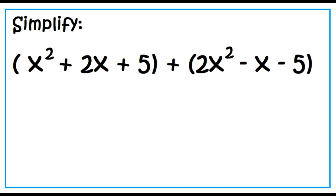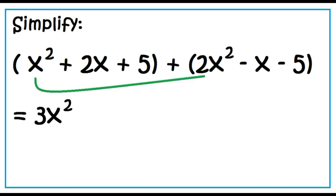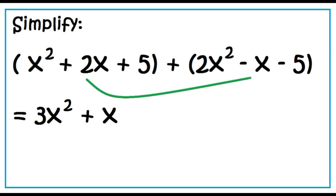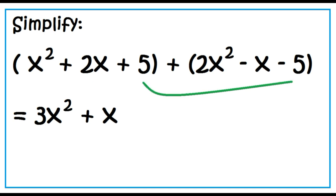Simplify: the quantity x squared plus 2x squared plus 2x plus 5, plus the quantity 2x squared minus x minus 5. Combining similar terms: x squared plus 2x squared is 3x squared; 2x plus negative x is x; 5 plus negative 5 is 0. The answer is 3x squared plus x.